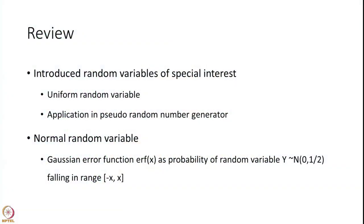So far we have introduced two kinds of special random variables. One is a uniform random variable — these are all continuous in nature. If you recall, we also introduced discrete random variables: special random variables such as discrete uniform distribution, binomial distribution, Bernoulli trial, negative binomial, and so on.